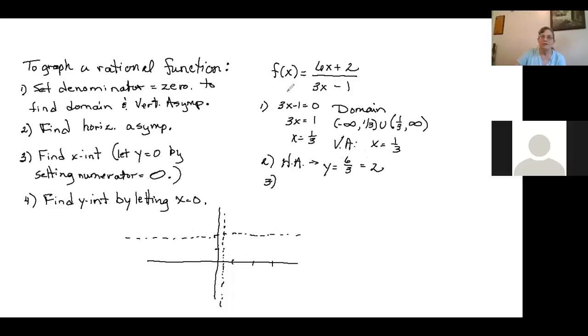Your x-intercept you get by setting the numerator equal to zero. So if we put 6x plus 2 equals 0, subtract the 2, and then divide by 6, is negative 1 third. So we've got the point negative 1 third, zero. So if here's the one, that would be approximately here.